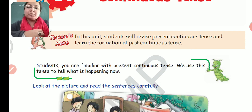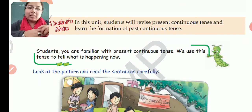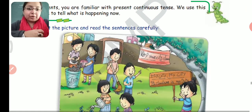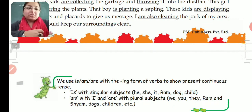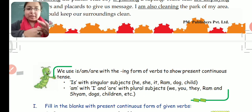We use this tense to tell what is happening now. We are using present continuous tense to tell what is happening at the moment. Now I'll explain how to frame a sentence in order to show present continuous tense.